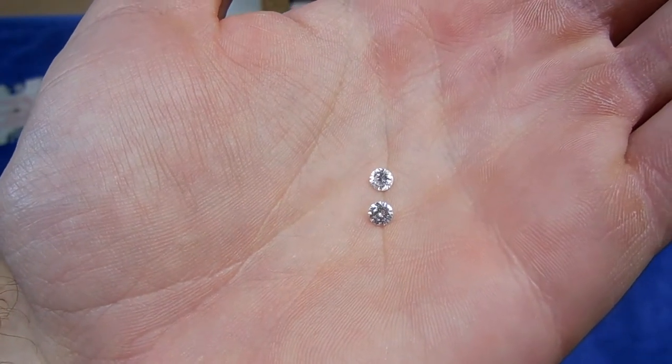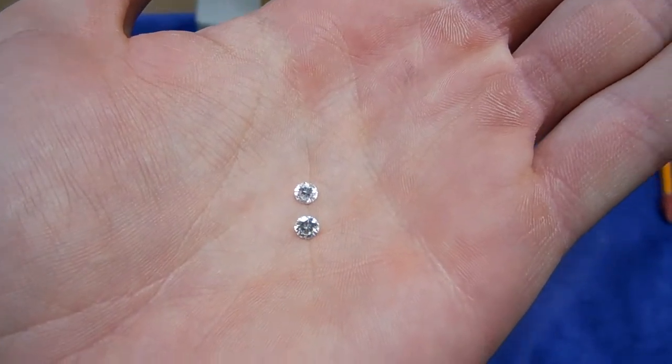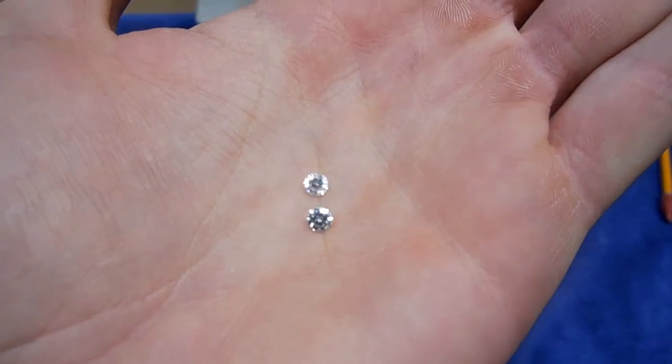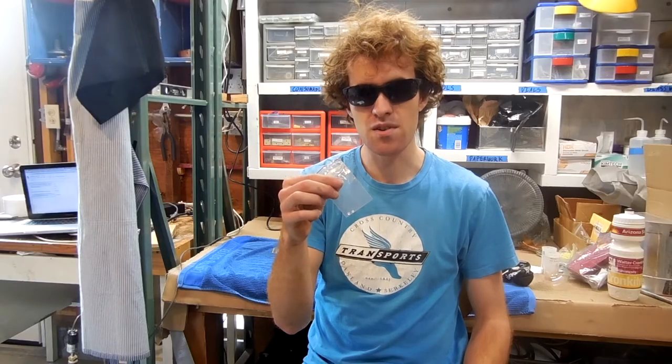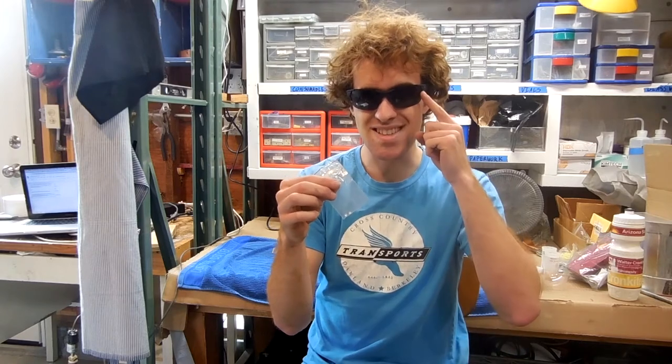I have two nearly identical stones in my hand. One is a real diamond worth about $400 and the other is a piece of cubic zirconia worth about $5. Today I'm going to demonstrate how to tell them apart using science and sunglasses.